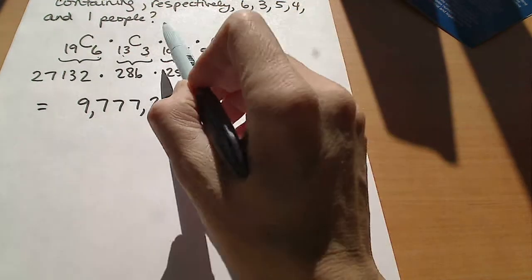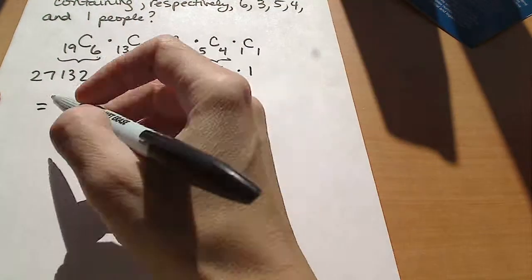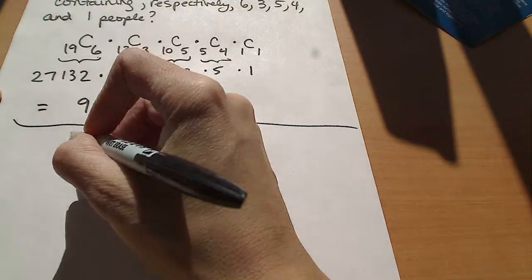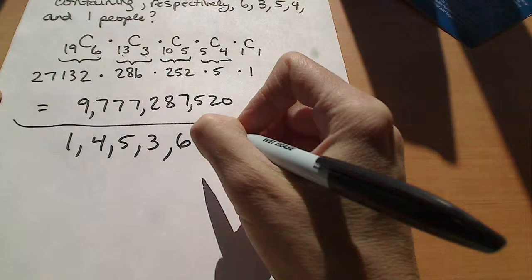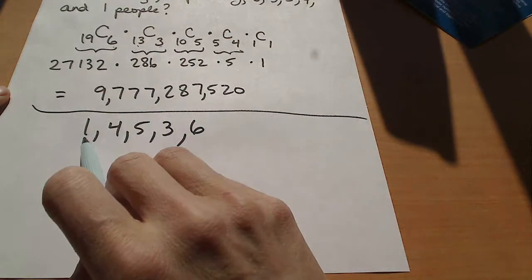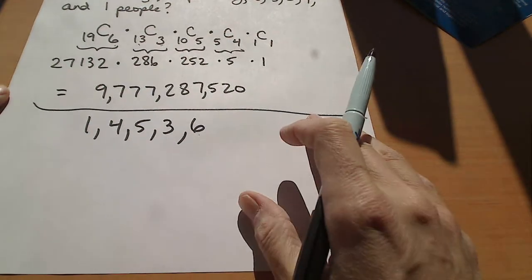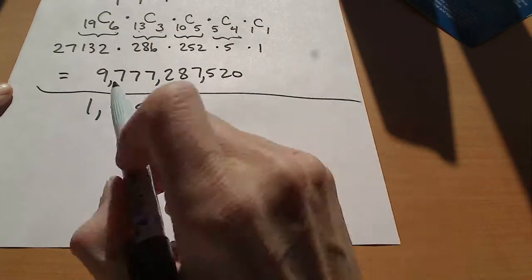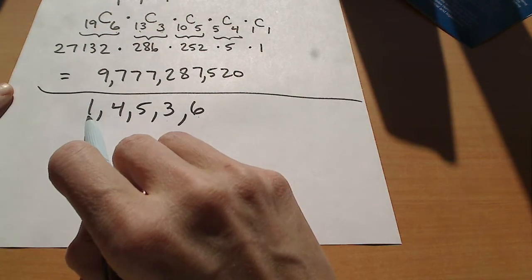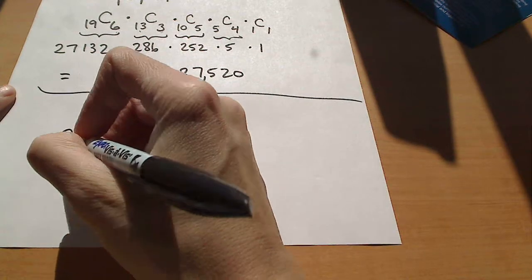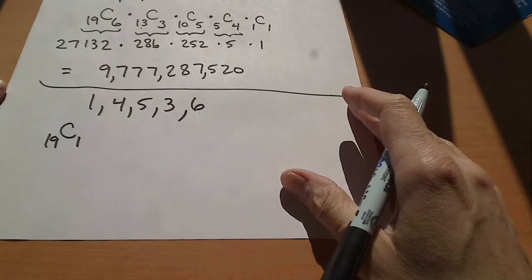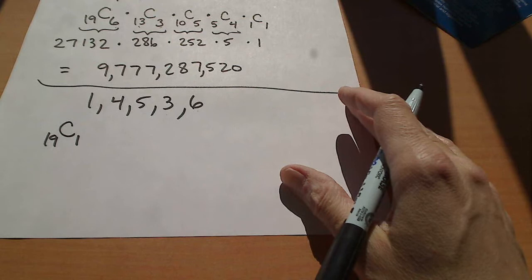All right. So what I'm going to do this time to count it is I'm actually going to count backwards. So let's instead go and take a look at dividing up or divvying out the groups in this order. So I'm going to place one person first, then 4, then 5, 3, and 6. Okay. So if I place the first person, the group of one first, then I have 19 to choose from, and I'm choosing one person. So that would be a combination of 19 taken 1.